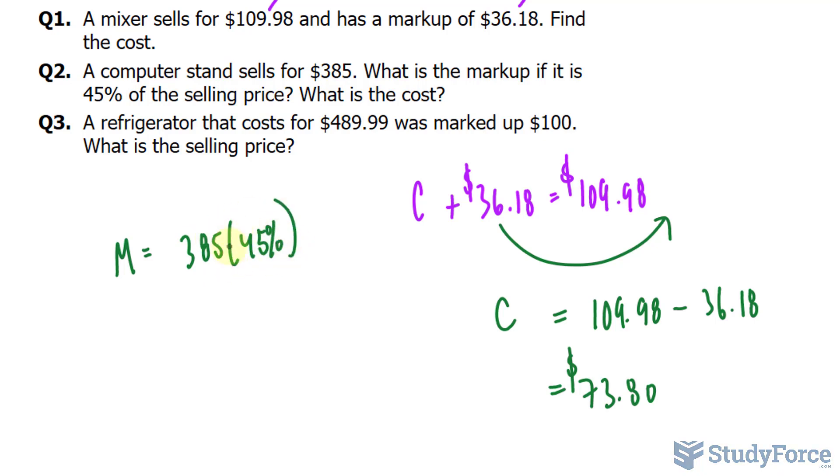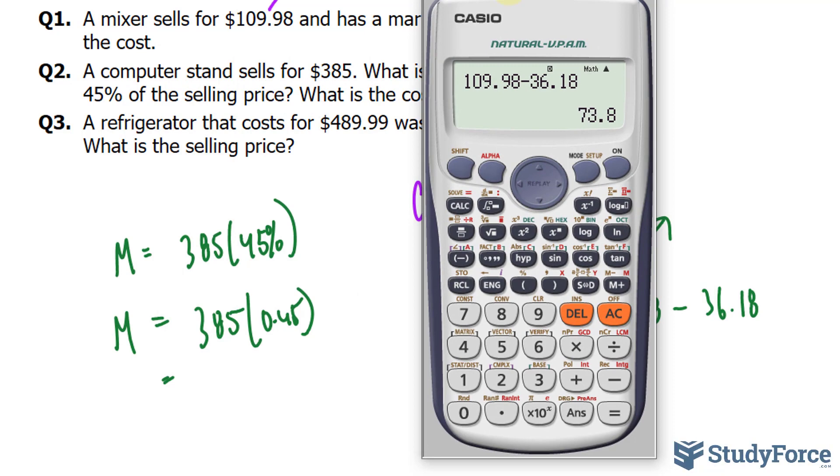We can't use percentages in our equations. We need the decimal version. We divide 45% by 100%, and we end up with 0.45. So let's see how much this company marked up the item in which it purchased from the factory. $385 times 0.45. They marked it up by $173.25.